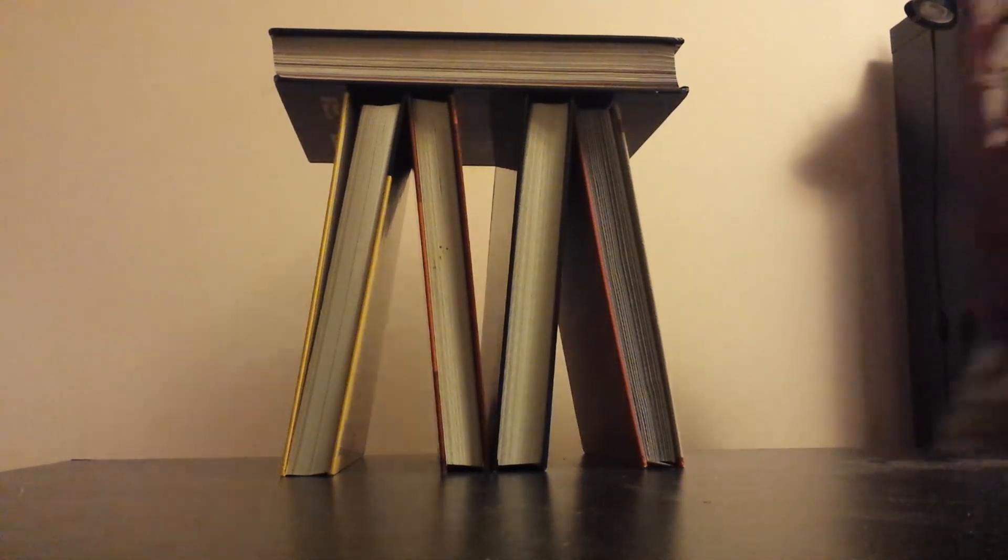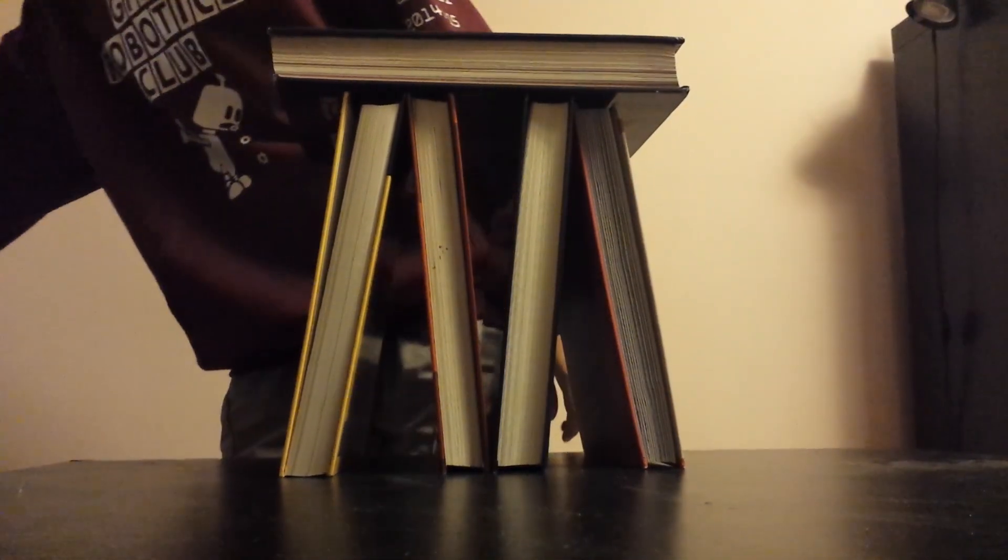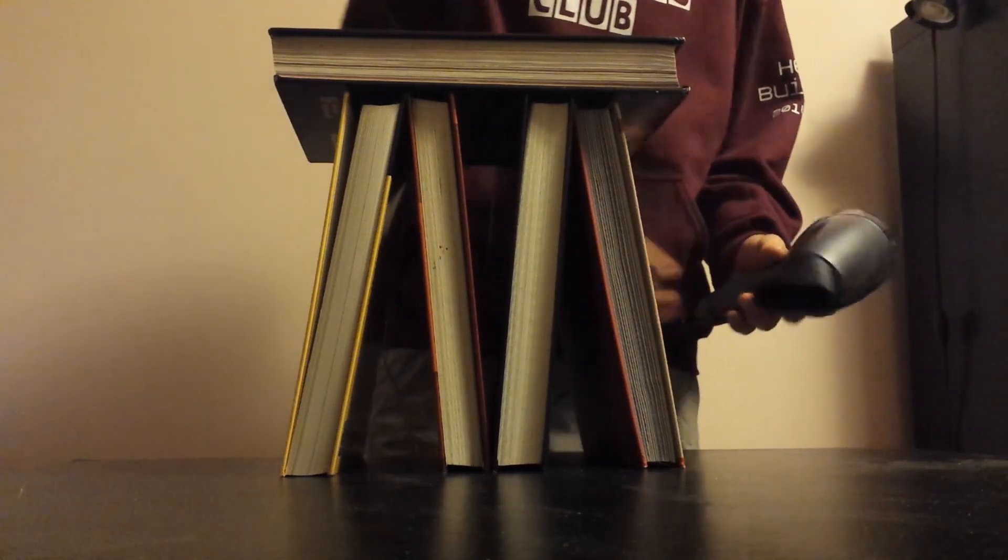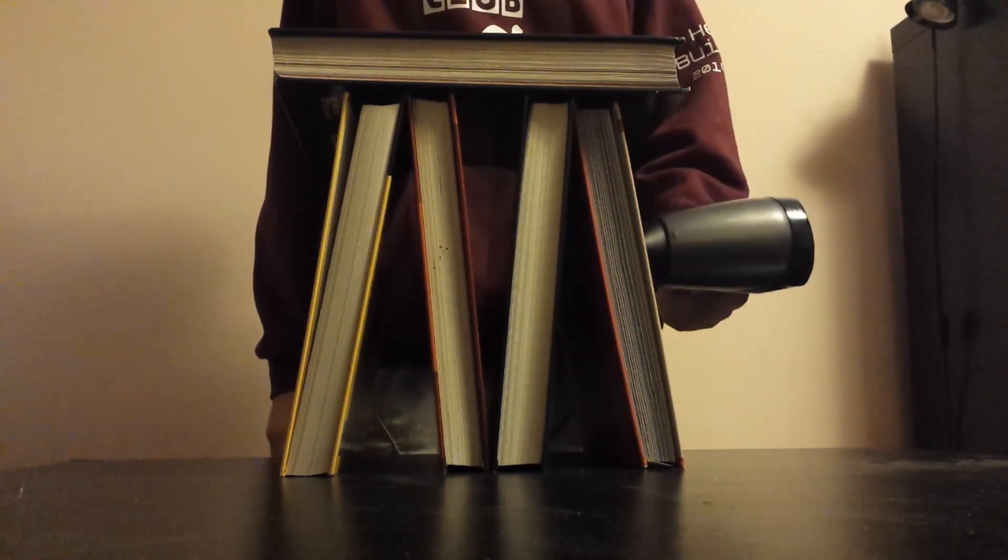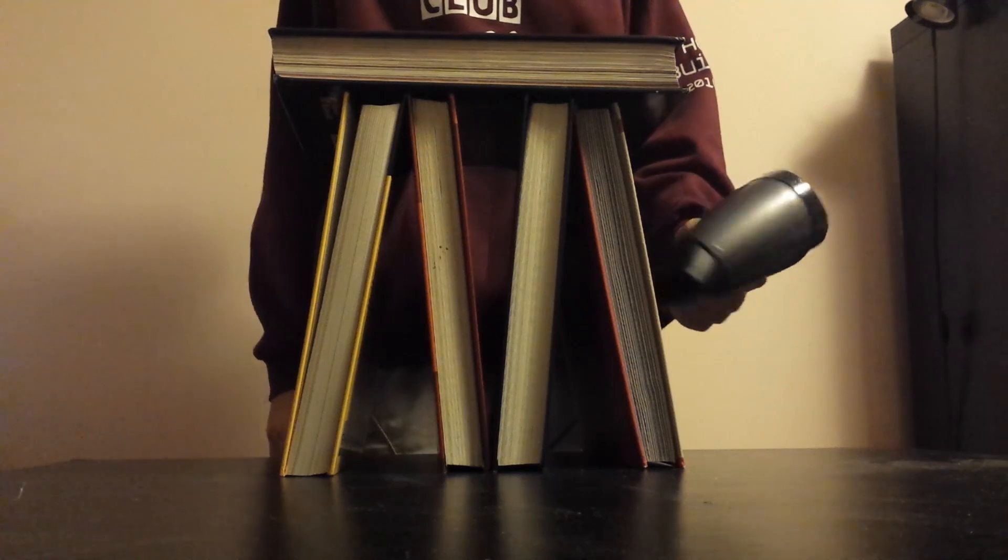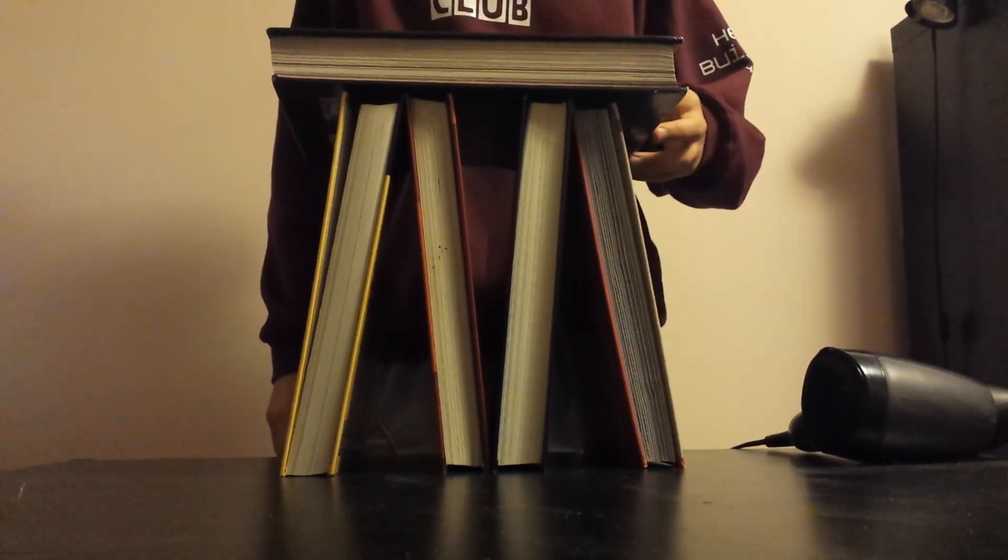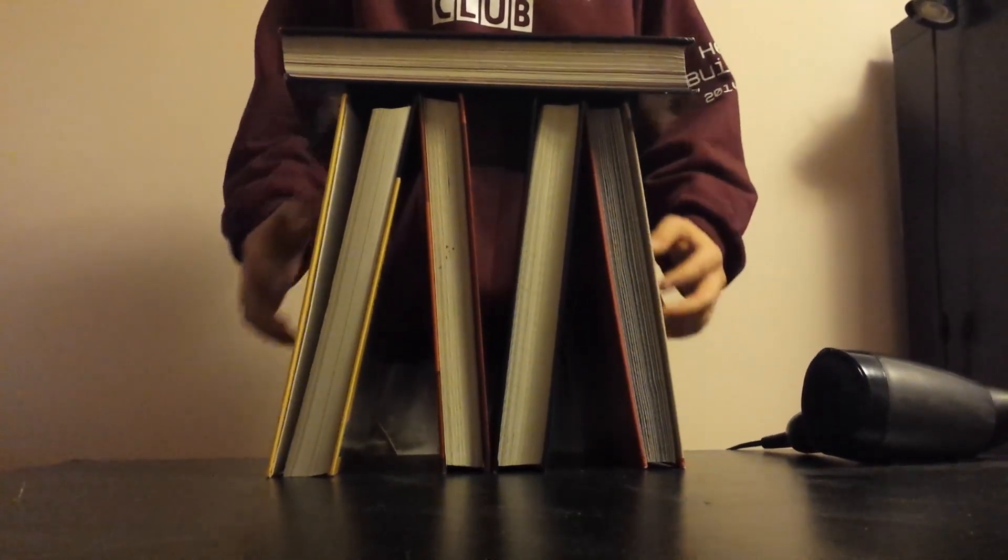In the second example, we can see that when you make the house out of textbooks instead of cards, the structure becomes a lot more stable. You can blow a blow dryer at the textbooks, you can even hit them, and they still won't fall over. That's because the textbooks are made out of a sturdier material so they won't fall over.